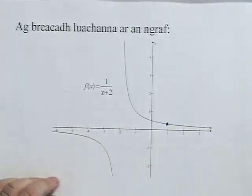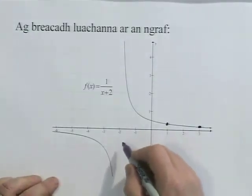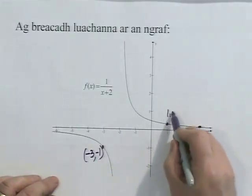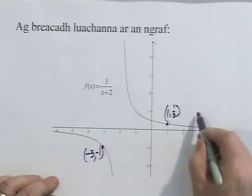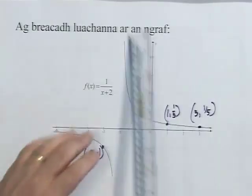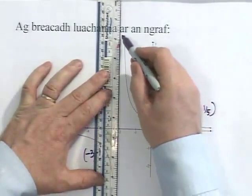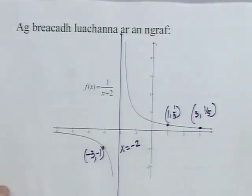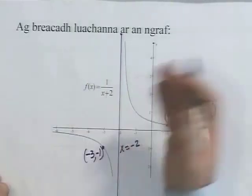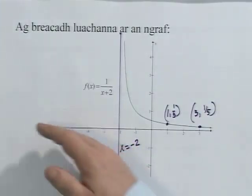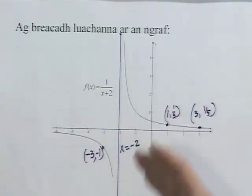The value is 1/5 and 1/3. For -3, it's -1. Now we'll plot these points on the graph and sketch it. There's a line there, the asymptote. That's the line where x equals -2, because it's not defined there. So there's the graph, and that's the graph sketched.